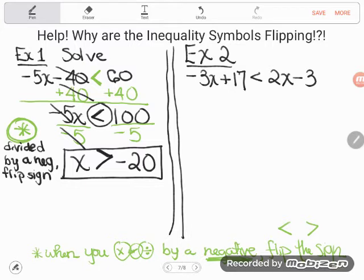Now that's not the only time we can see a symbol flip. Let me show you what I mean. Let's look at example two, a little more complicated. Example two says negative 3x plus 17 is less than 2x minus 3. So again we have a linear inequality. Linear meaning I don't have any exponents on my x's, anything like that. Before you start trying to get x alone, you should get the x's together.